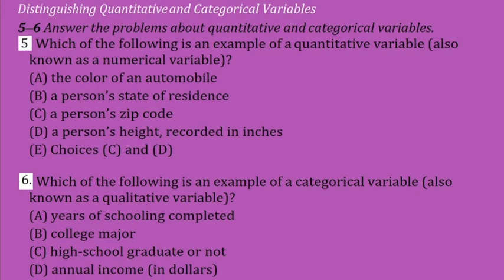Distinguishing quantitative and categorical variables. Question 5 and 6: answer the problems about quantitative and categorical variables. Question 5: which of the following is an example of a quantitative variable, also known as numerical variables? A: years of schooling completed; B: a person's state of residence; C: a person's zip code; D: a person's height recorded in inches; E: choices C and D.